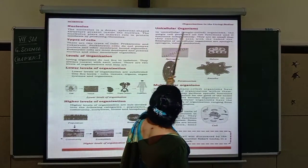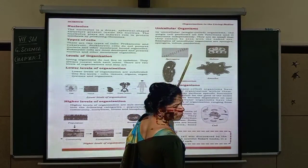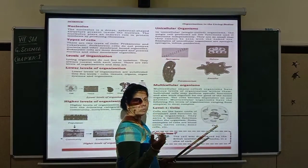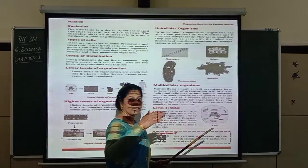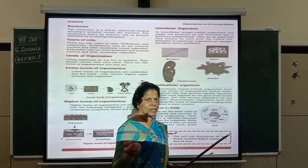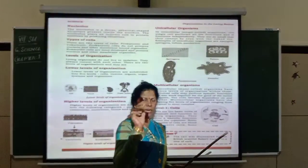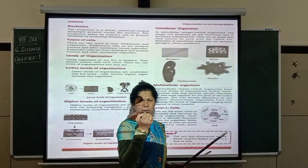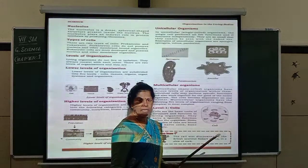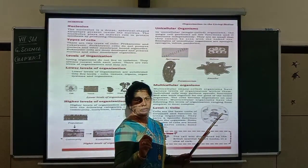Unicellular organisms are so small that they cannot be seen with the naked eye — they are very minute. One micron means you cut one millimeter into a thousand parts — that is how tiny they are. We require an electronic microscope to observe them.